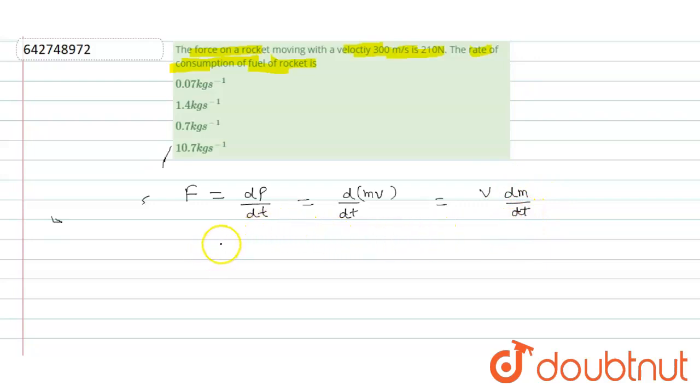Force on the rocket is 210 equal to velocity v which is 300 into dm by dt, which is rate of consumption of fuel. So dm by dt becomes 210 divided by 300.